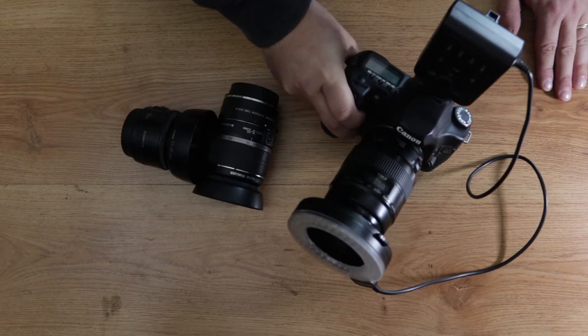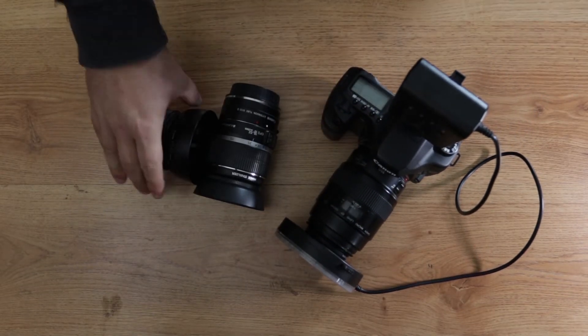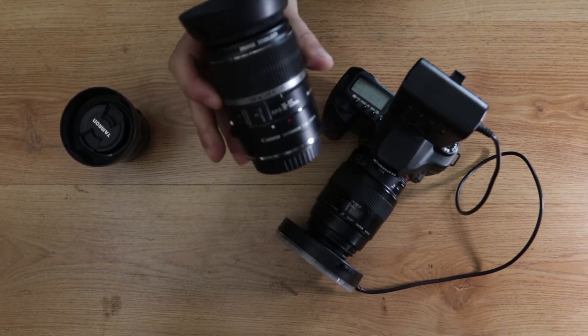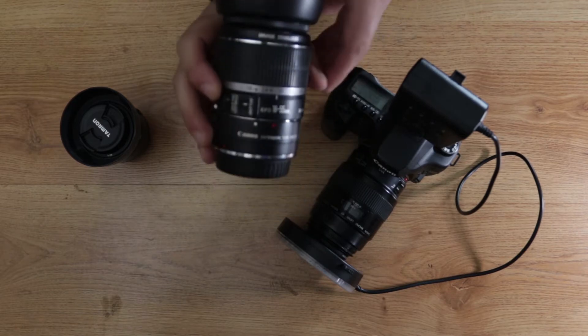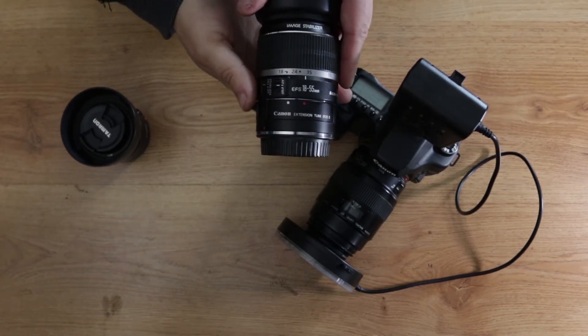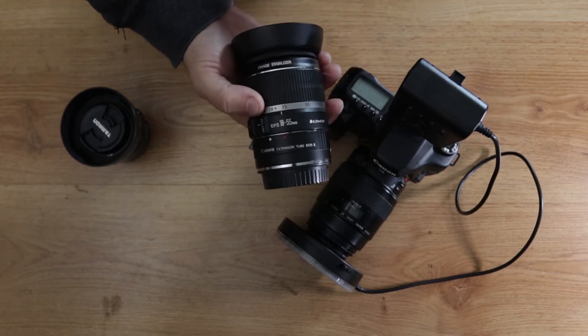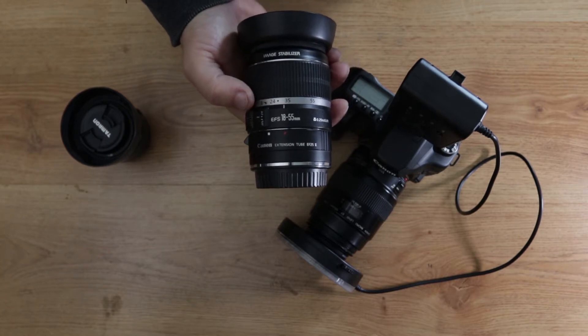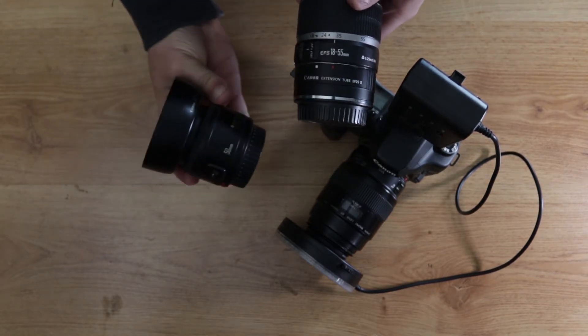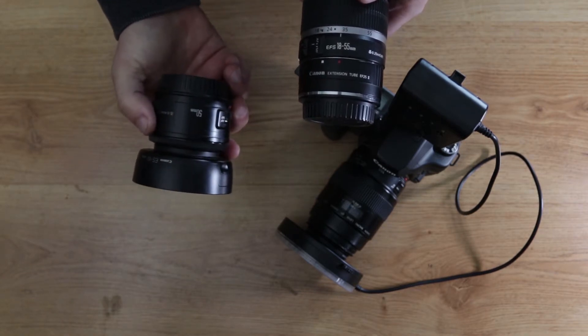I'm also going to use a standard kit lens that comes with a lot of the Canon cameras. So this is the 18 to 55, and this one has image stabilizer. And I'm going to be adding the extension tube EF 25 to this. I will also be adding the extension tube to a nifty 50, 50 millimeter f/1.8, and see what the difference is between the two.